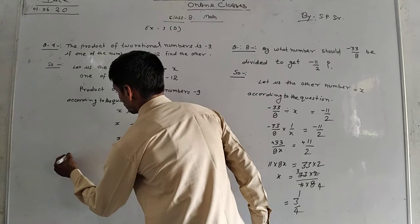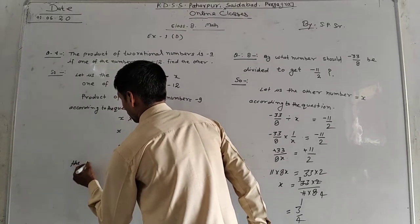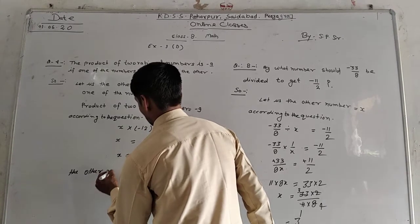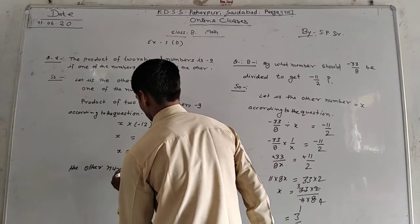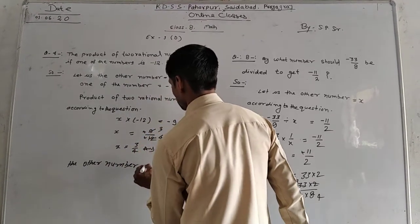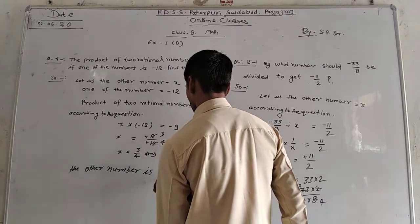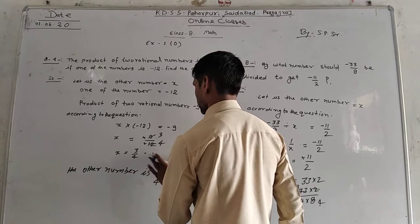So here we write the other number is 3 by 4. This is our correct answer.